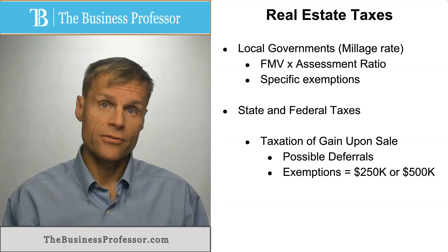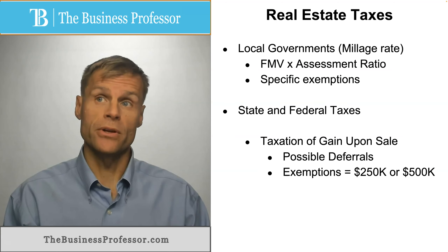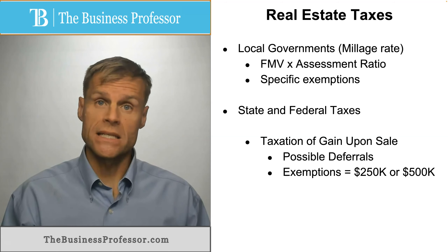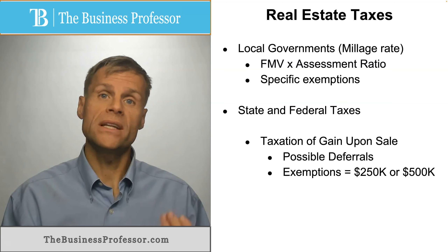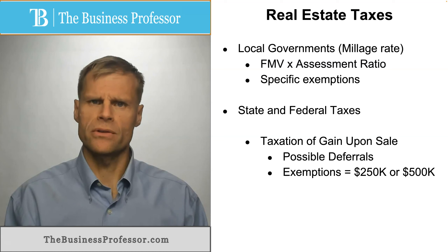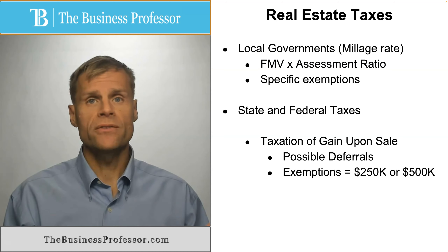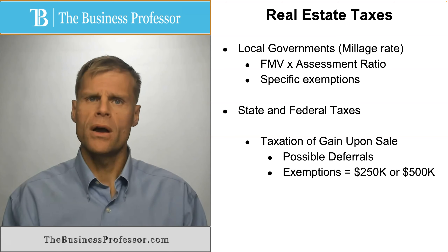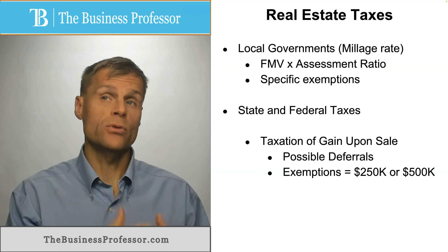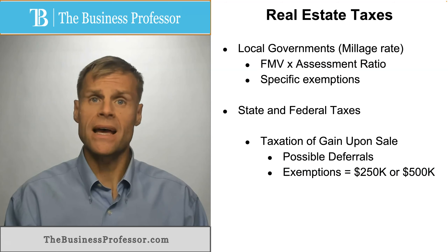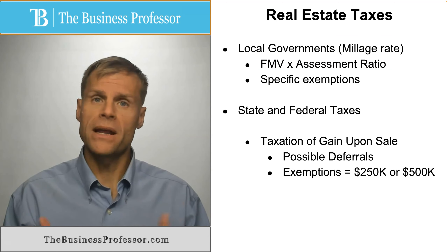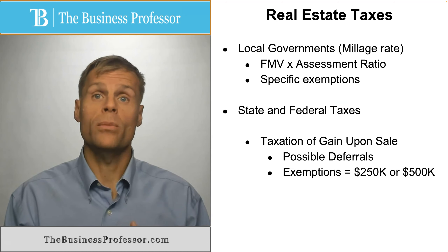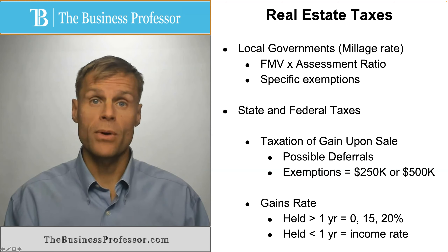There are also exemptions from taxation on gain attributable to property. One notable example is the sale of a personal primary residence. If you have gain on the sale of your personal home and you've lived there for the requisite amount of time — generally two years under the federal code — you can exempt $250,000 per individual or $500,000 per married couple of gain. So if you buy a home for $500,000 and later sell it for $750,000, having lived there the requisite time and being married, you could defer up to $500,000 in gain from the sale. That's a form of exemption whereby you would not pay taxes on the disposition of that property.